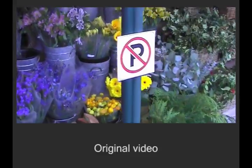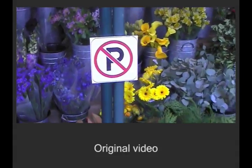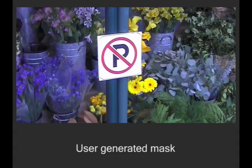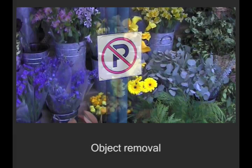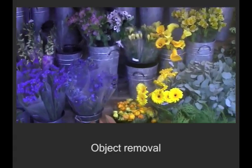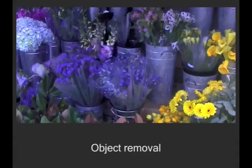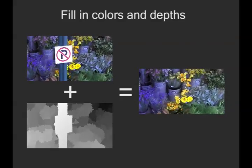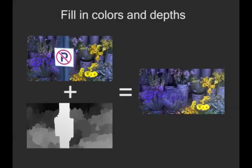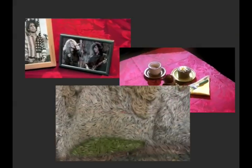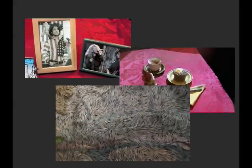Here is a video sequence of a flower shop. Unfortunately, the no parking sign is unattractive and occludes much of the scenic background. The user can select the no parking sign and the pole in a single video frame, and the system removes them from the entire video. To produce this effect, our system fills in the background by projecting the colors from neighboring video frames using the depth estimates. We have shown how several still photographs can be used to greatly enhance and edit a video sequence.